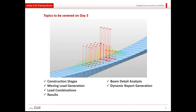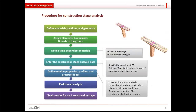Yesterday I showed this slide covering the basic manual way of defining construction stages. You have to define materials, assign elements to groups, define the time-dependent material properties, enter the construction stage data, specify which groups are to be activated or deactivated, define the tendon profile properties, assign those to the groups and stages, perform the analysis, and check the results as needed.